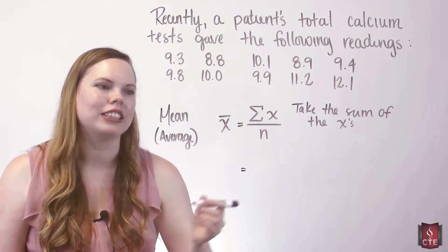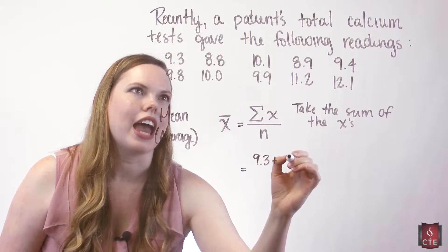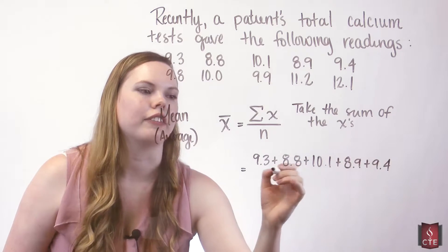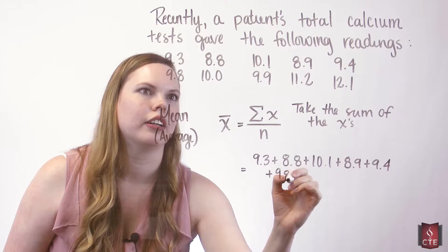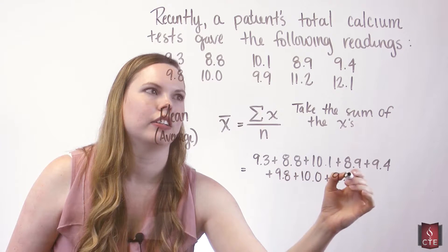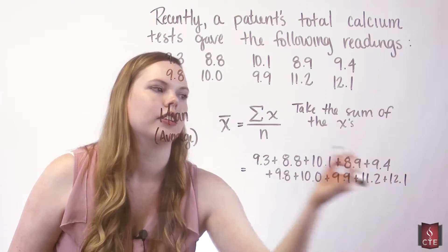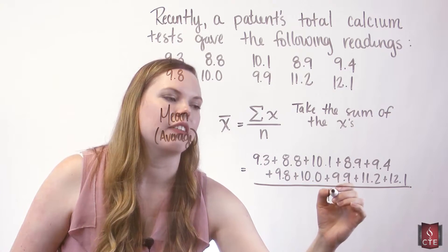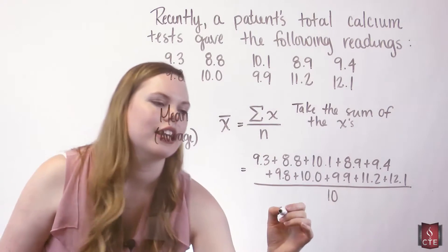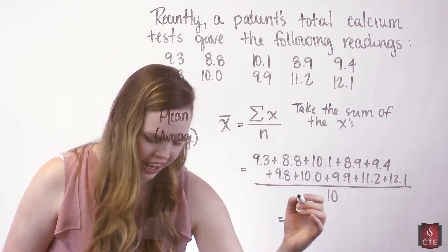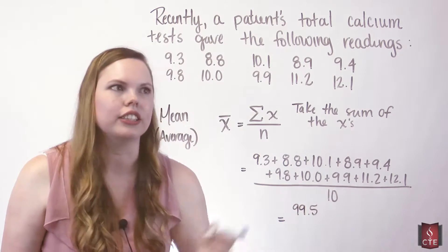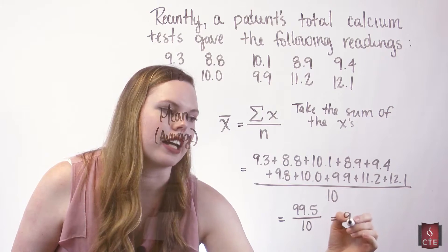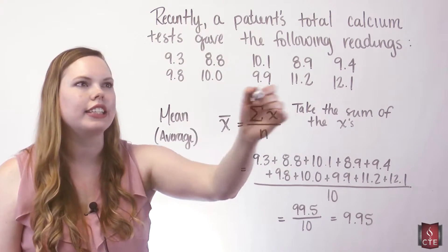Let's do it — take the sum of all these data values, all these X's. We add each data value together, and the sum ends up being 99.5. That's the sum of all our X's — the top of this formula — and we're dividing by 10, so this gives us 9.95 as our mean.